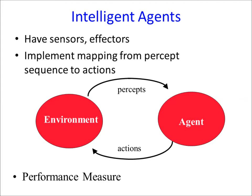An agent is constantly acting in some environment — it senses and performs actions, and the actions change the environment. Often the goal of the agent internally is to implement a mapping from observations to actions, and it does this because it is optimizing a performance measure. The characteristics of an agent are: sensors, effectors, a mapping from observation sequence to action, and a performance measure to optimize.